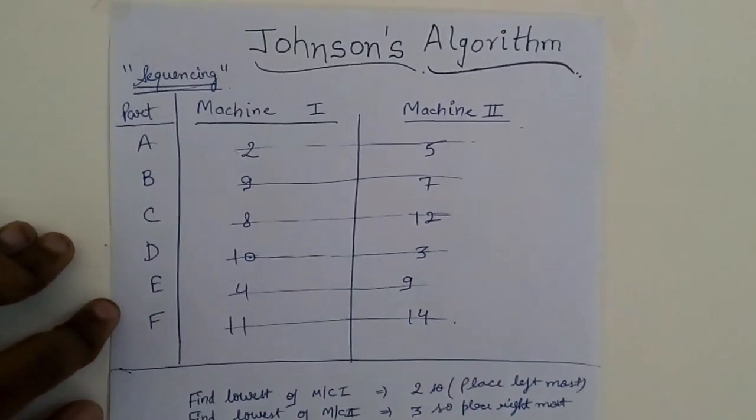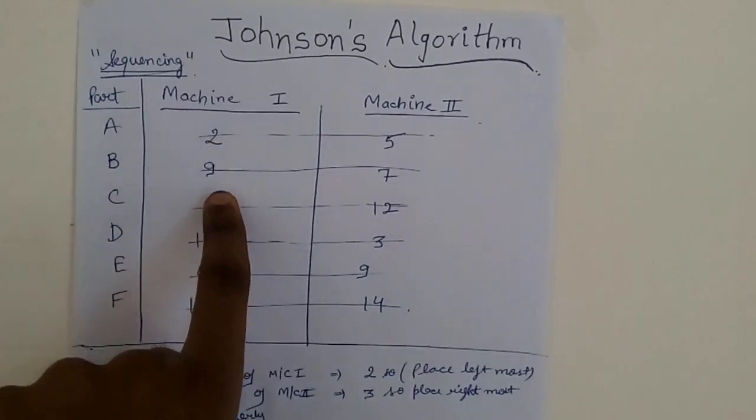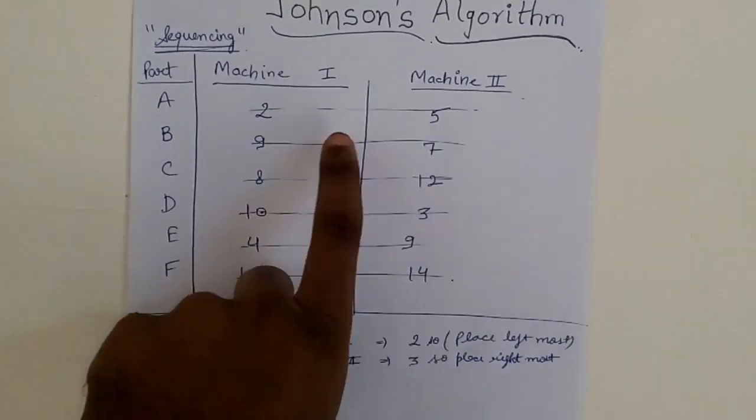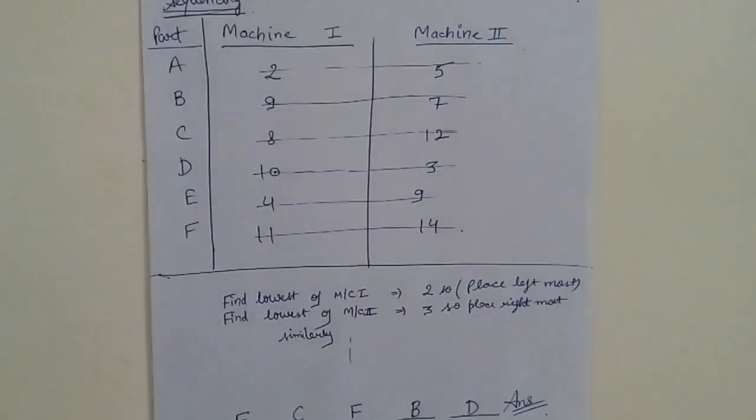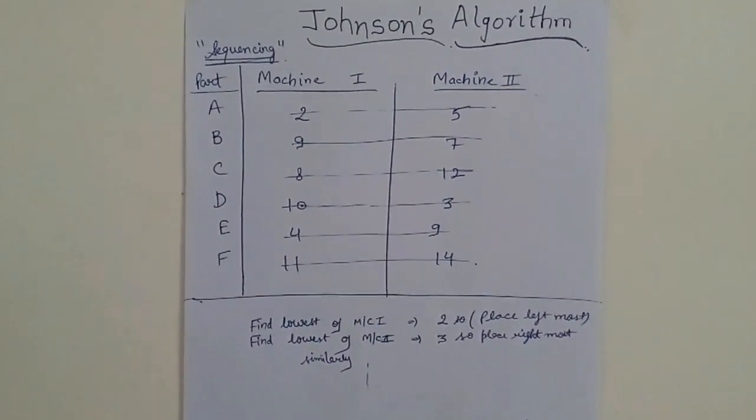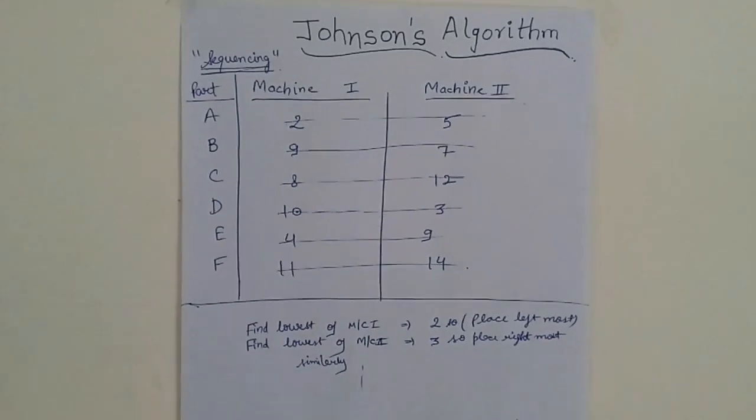The corresponding time taken on machine one and machine two are given like this: two, nine, eight, and so on. Similarly here. So you have to sequence all these parts.